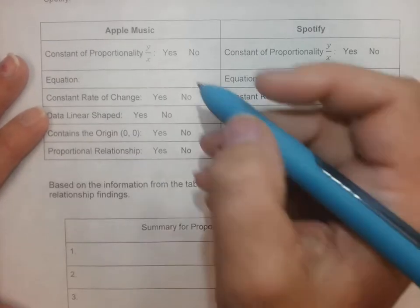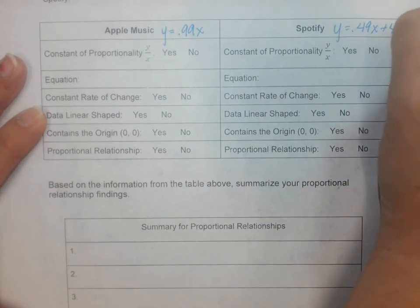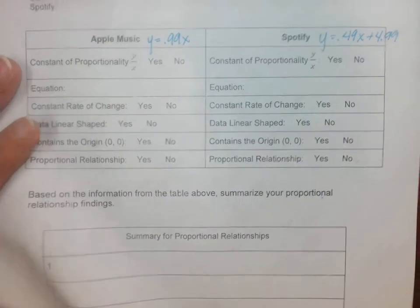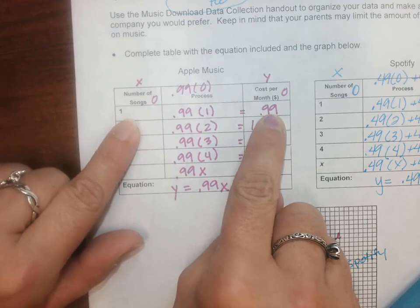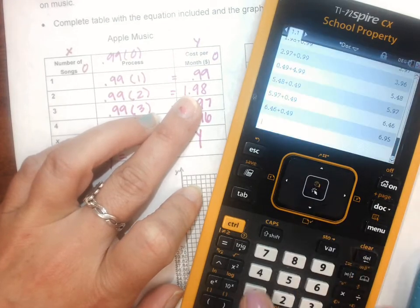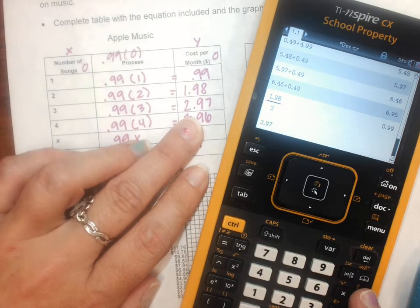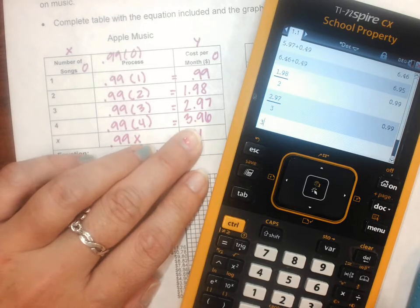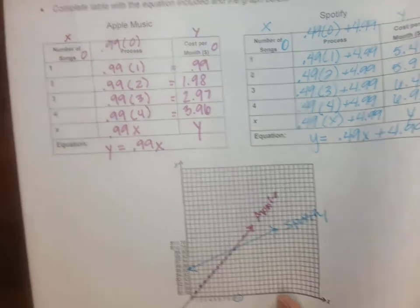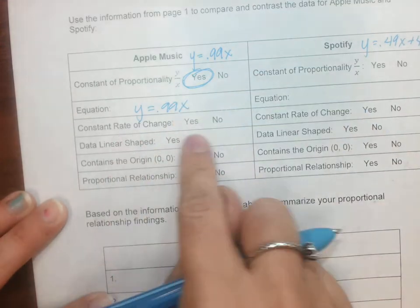When we talk about Apple Music, remember Apple Music was y equals 0.99x. Constant of proportionality - remember we talked about that yesterday - y divided by x. So I'm going to remind you: 99 cents divided by 1 is 99 cents. 198 divided by 2 is 99 cents. 297 divided by 3, 396 divided by 4. Look at that! Every time I'm getting 99 cents. So is it a constant of proportionality? Yes.